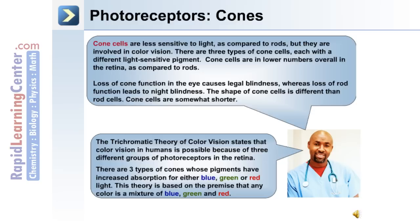The trichromatic theory of color vision states that color vision in humans is possible because of three different groups of photoreceptors in the retina. There are three types of cones whose pigments have increased absorption for either blue, green, or red light. This theory is based on the premise that any color is a mixture of blue, green, and red.